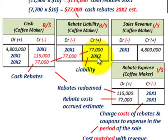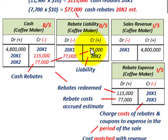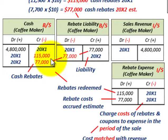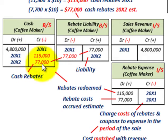In 20X2, we reduce that liability since we assume all those cash rebates come in the next year. We debit the rebate liability for $77,000 and credit cash for $77,000, removing the liability from the books as the cash rebates are paid out.